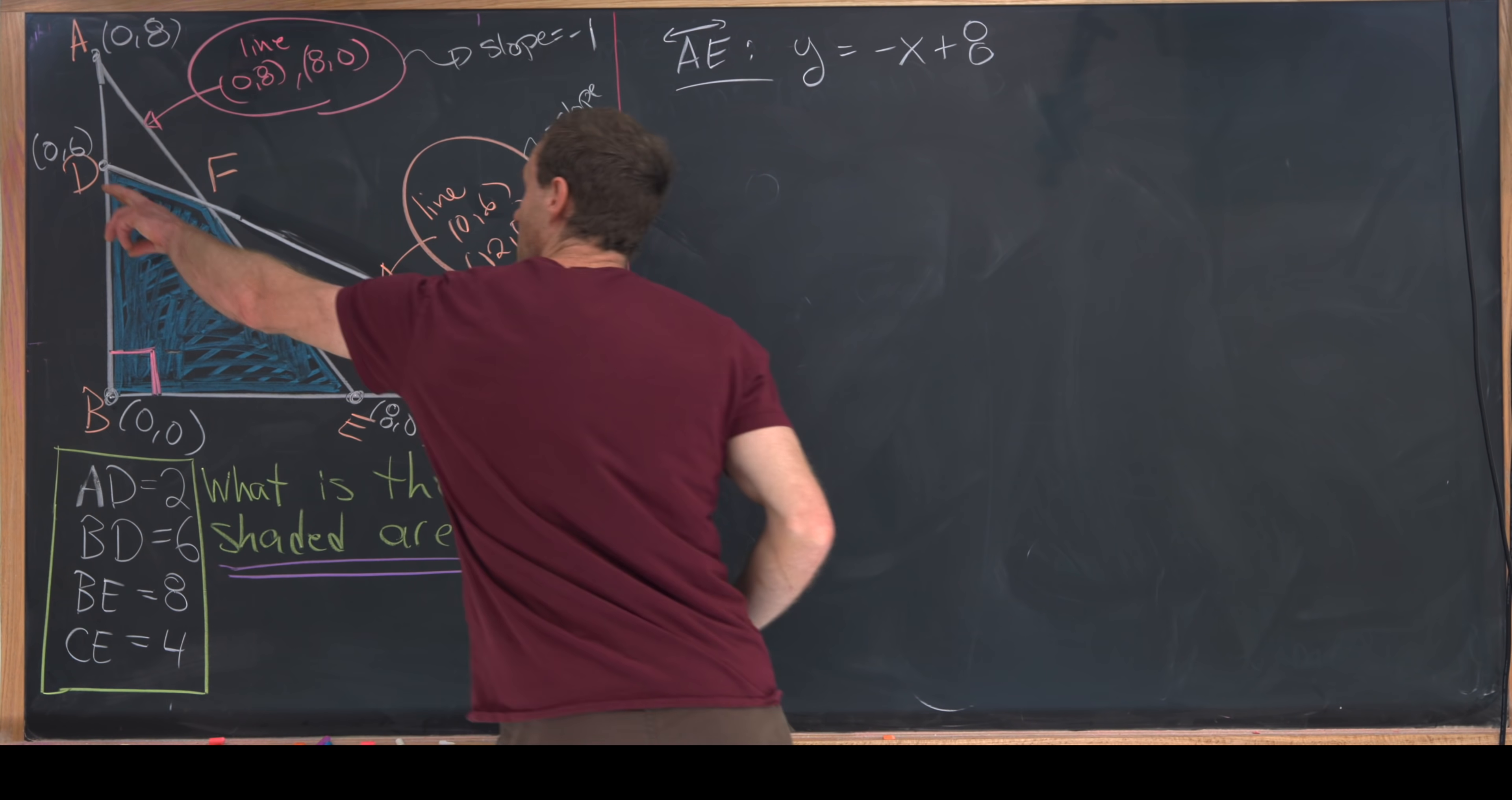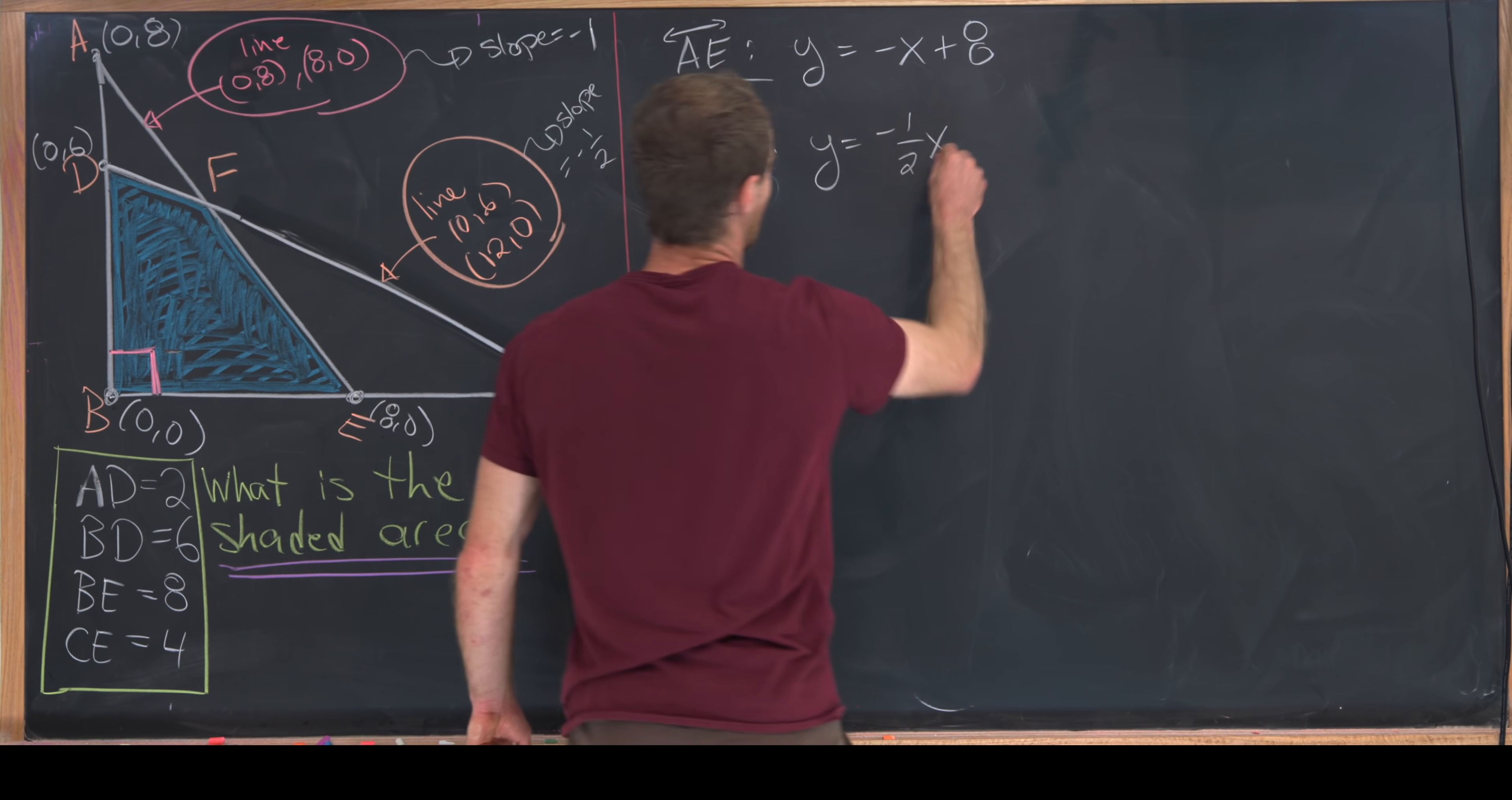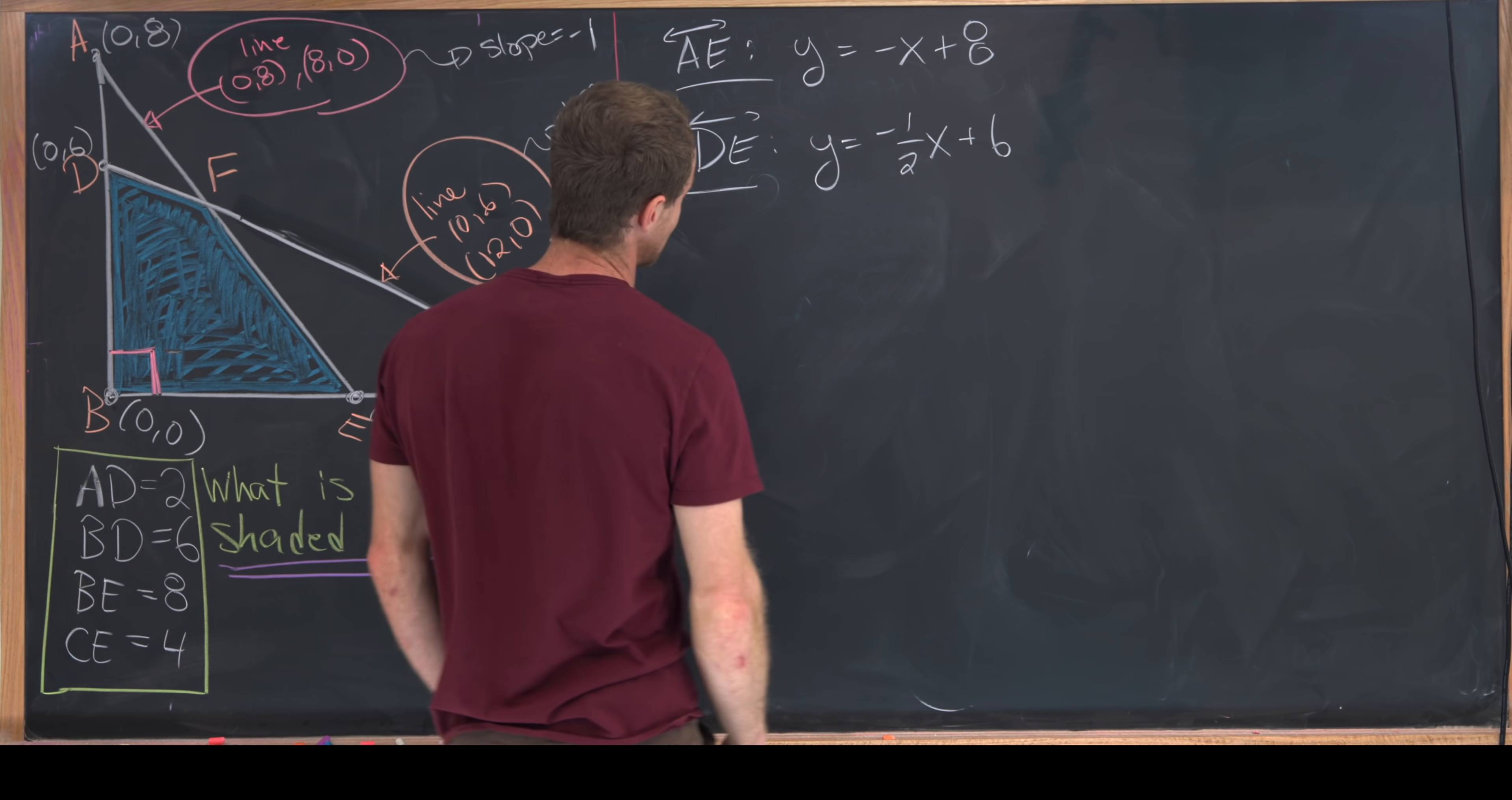Furthermore, this other hypotenuse is the line DE and it has equation y = -1/2 x + 6, again because we've got that y-intercept at 6.